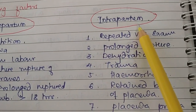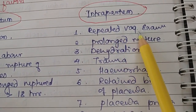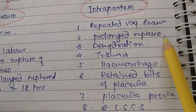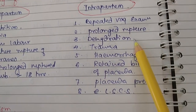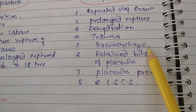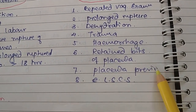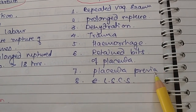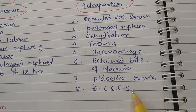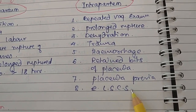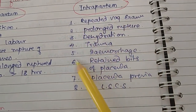During the intrapartum period, the predisposing factors include repeated per vaginal examinations, prolonged rupture of membranes, dehydration, trauma, hemorrhage, retained bits of placenta, placenta previa, and caesarean section.